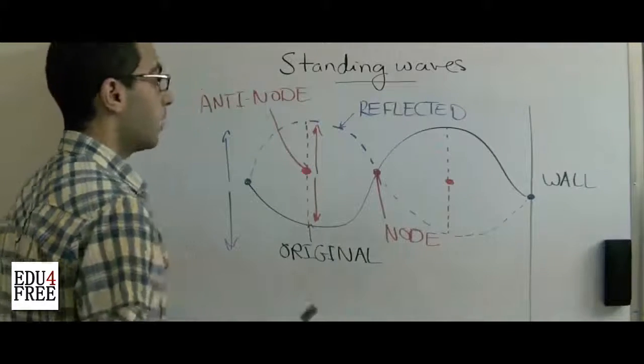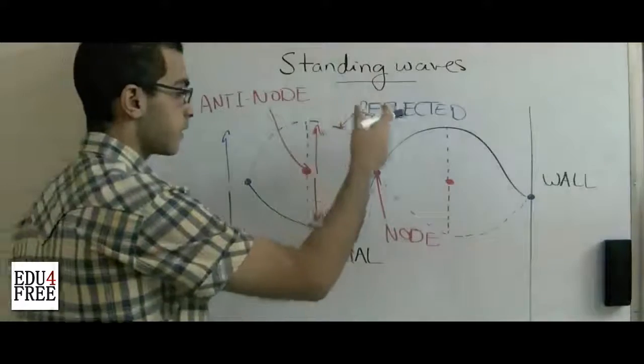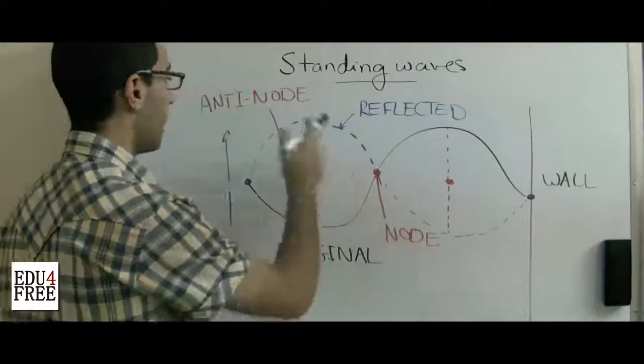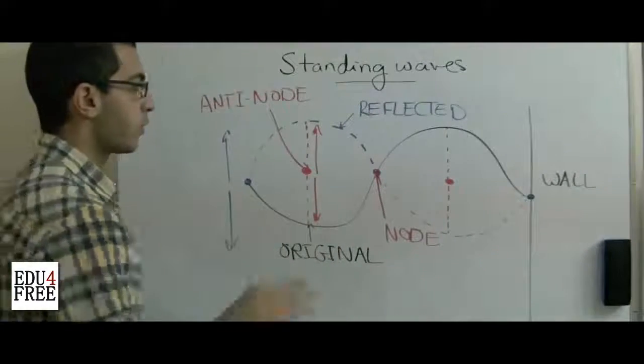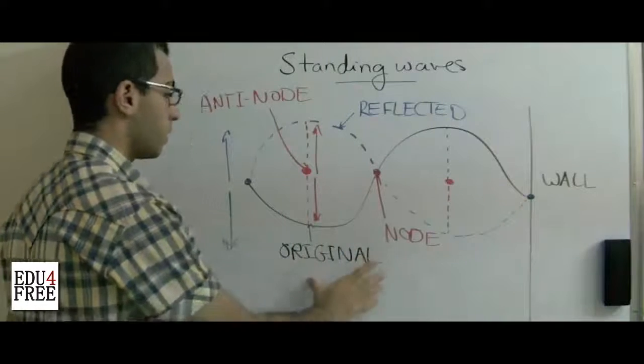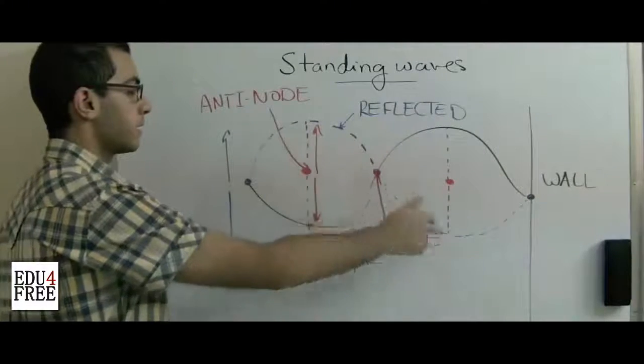So now we know that standing waves have nodes and anti-nodes. They are formed of the combination between the original and the reflected waves.